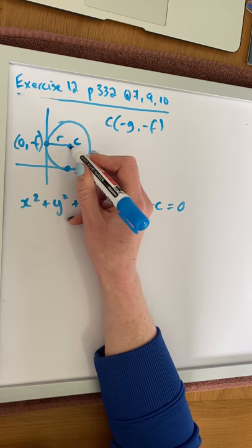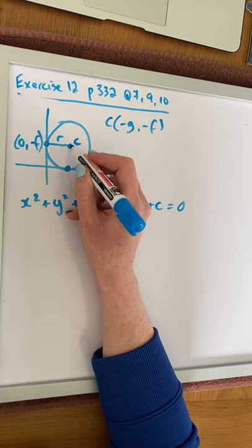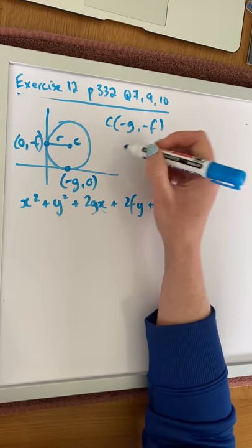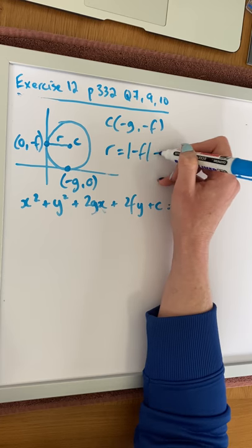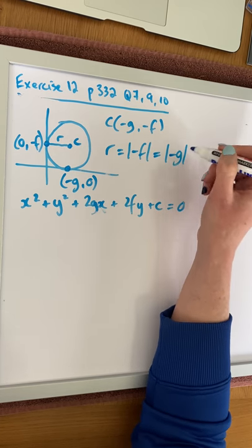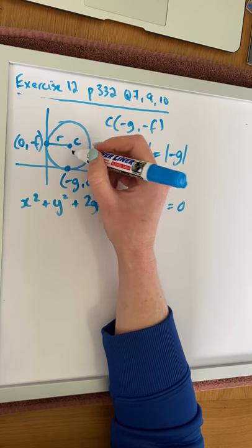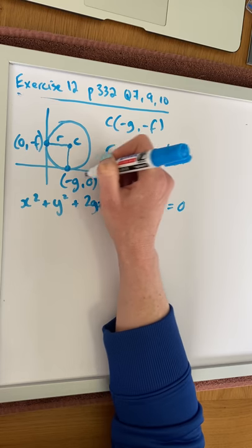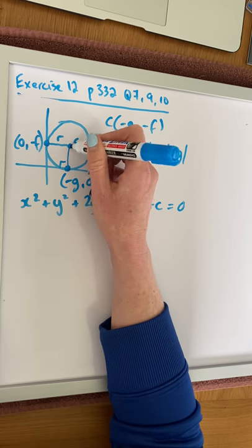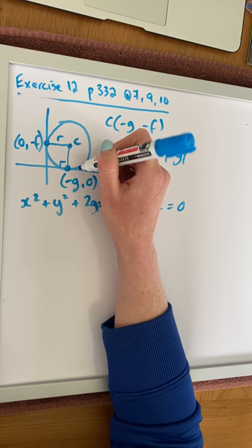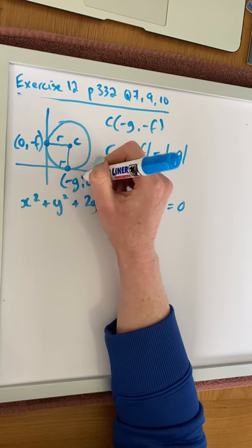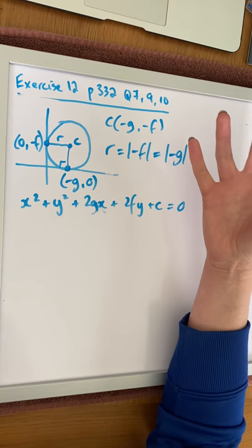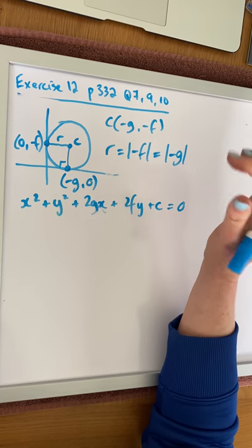This point on the x-axis will be the same distance away from the y-axis as our center point, so it's directly underneath the center point, which means the x-coordinate is -g and the y-coordinate is zero. The radius is going to equal the absolute value of -f or -g. If the x-axis is a tangent to the circle, the perpendicular distance from the center to the x-axis equals the radius. Therefore, r = |-f| or |-g|, using absolute value since radius is a length and can't be negative.